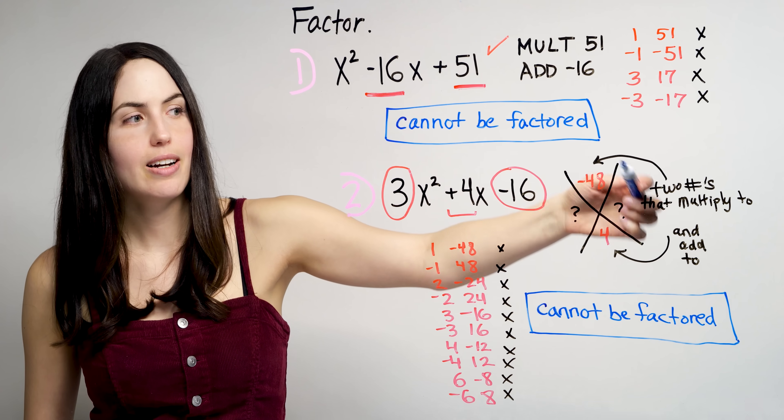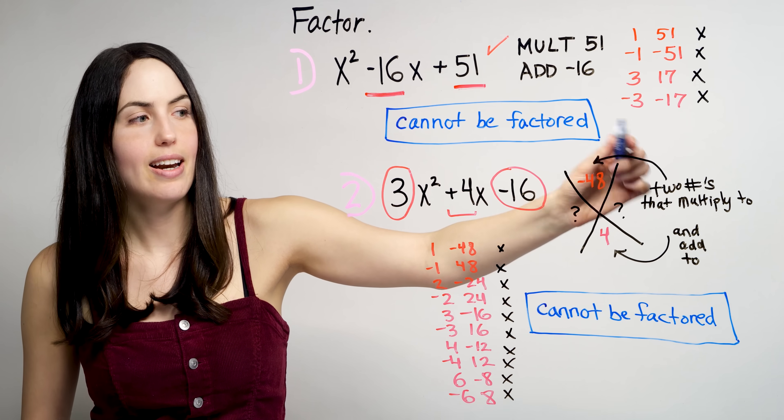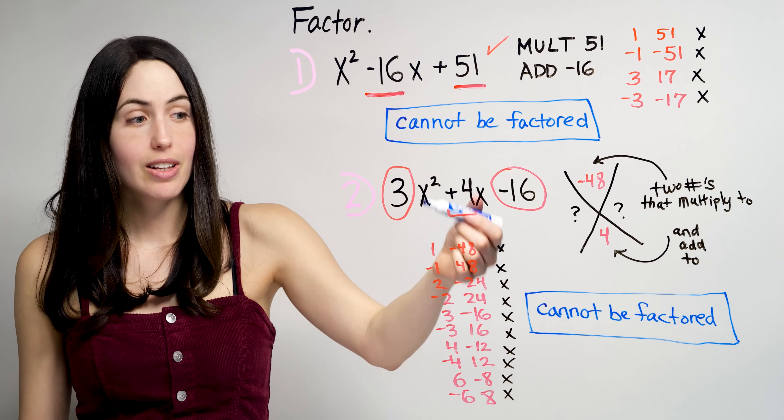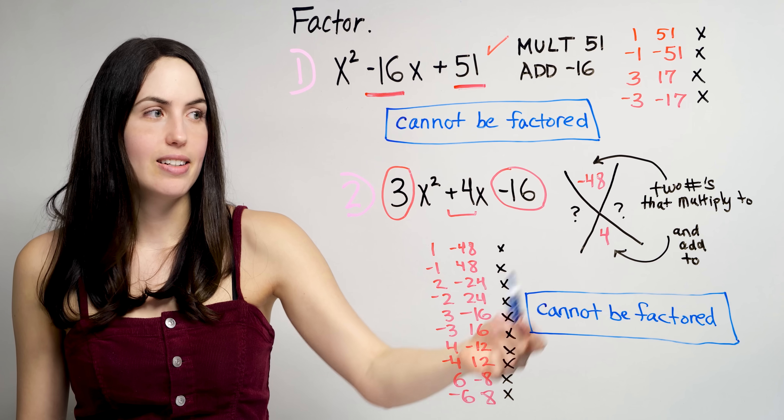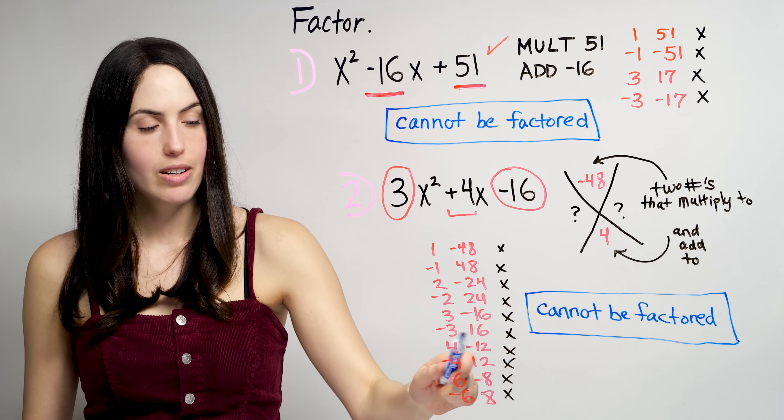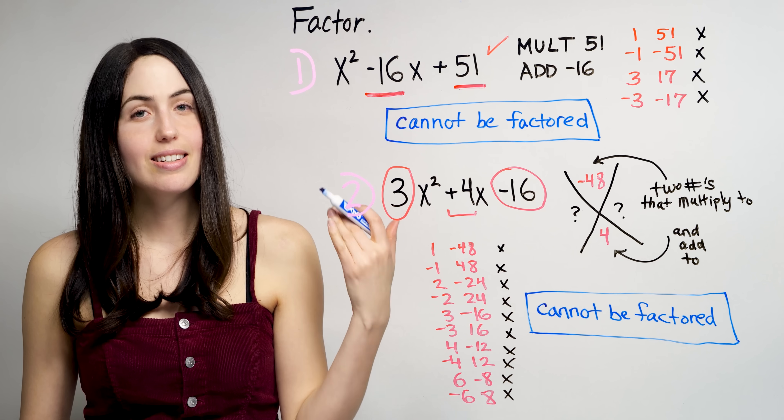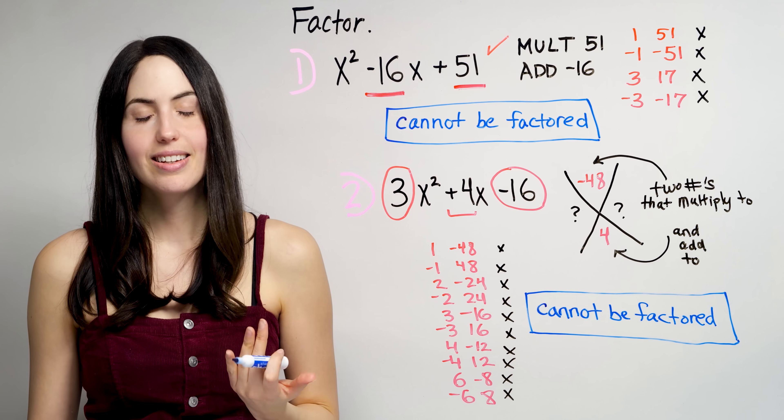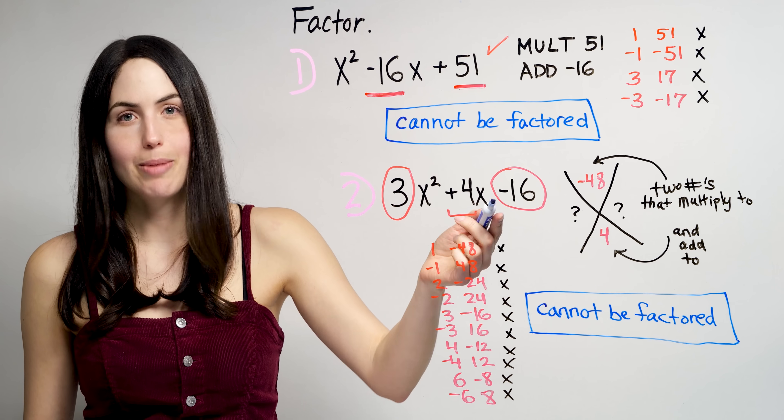And at that point, you're looking for two numbers that multiply into the top number, negative 48, and add to 4. At that point, it's a lot like the trial and error method for that step. You list out your factors that multiply to negative 48, and check which ones add to positive 4. None of these add to positive 4. So in this case, the magic x did not help you. Did not help you factor. Why? Because the problem could not be factored.